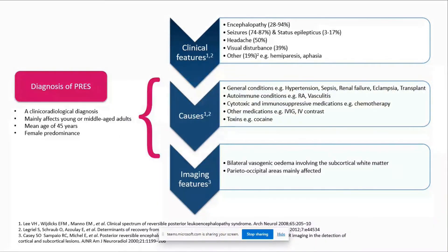A headache can be seen in about 50% of patients and tends to be typically gradual onset, diffuse, and dull. Patients may also have a thunderclap headache, but this is less common and raises the possibility of an alternative diagnosis such as RCVS.